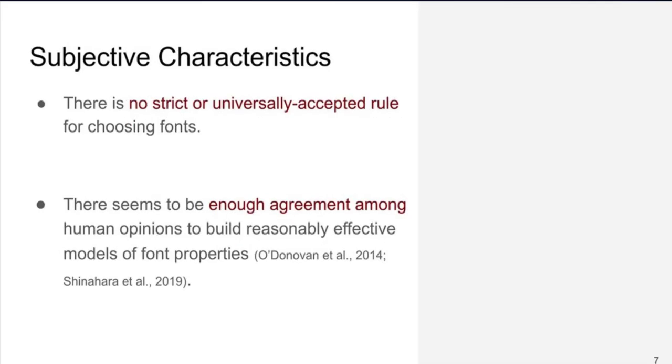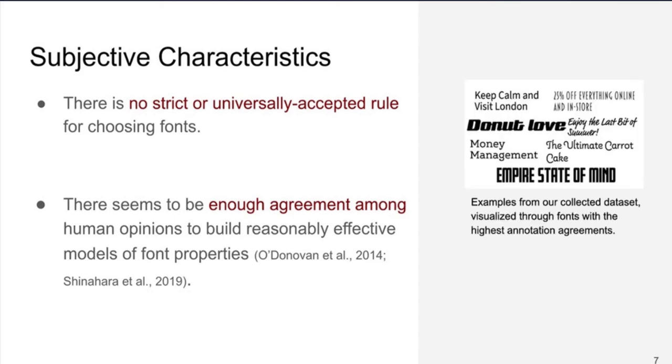Font selection is a relatively subjective task. Most graphic designers agree that there is no strict or universally accepted rule for choosing fonts. Basically, different social and personal factors can be involved in typeface selection. However, according to previous works, there seems to be enough agreement among human opinions to build reasonably effective models of font properties. On the right side, I am showing you some examples from our collected dataset in which instances are visualized through fonts with the highest agreements. As an example, money management with a business context is rendered with a formal font, and enjoy the last bit of summer is shown with a modern display font.